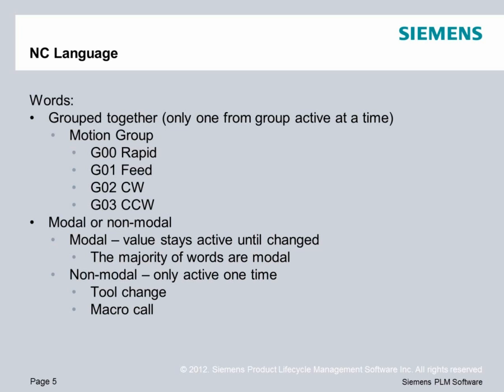For example, if I am at X position 1.2, that value is modal. I will stay at X position 1.2 until I get a new X word and a new X position. Some words are non-modal, and they're only active one time. An example of a non-modal word would be a tool change — I'm going to fire off a tool change, and then once I'm done, I'm not going to fire off another tool change. Macro calls are also an example of non-modal words.